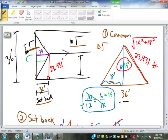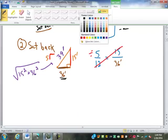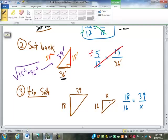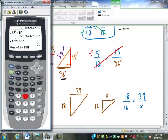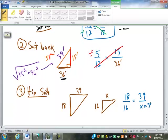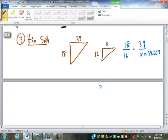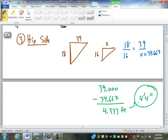So now we have the longest hip jack. We can find the next longest one here. We know this is at 18, this is going to be what? 16. So this is just the same as what we did before. So we're looking on the hip side. This is 18, this is 39. This is going to be 16, and this is going to be x. So 18 over 16 equals 39 over x. So 39 times 16 divided by 18, 34.667. So we go ahead and subtract. 39.000 minus 34.667 is going to be 4.333 feet. Otherwise known as 4 foot 4 inches. This is a setback.